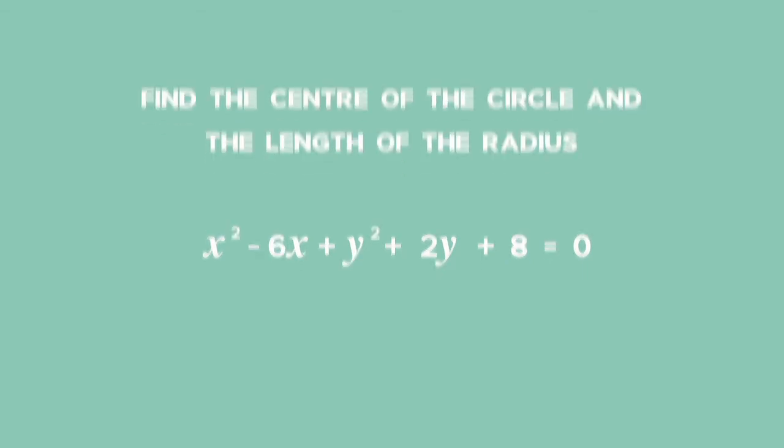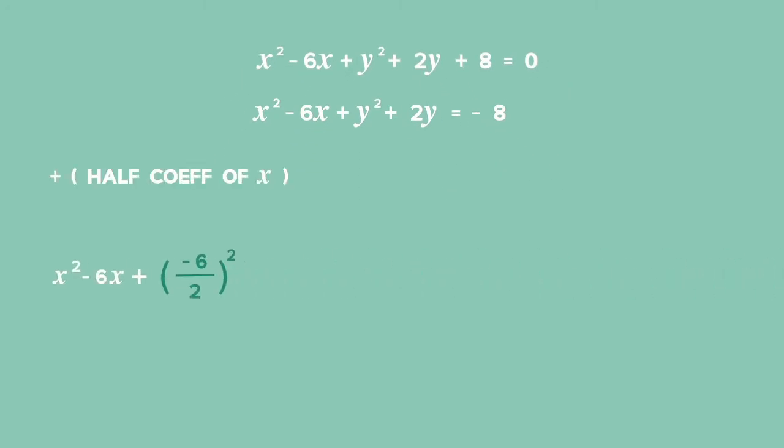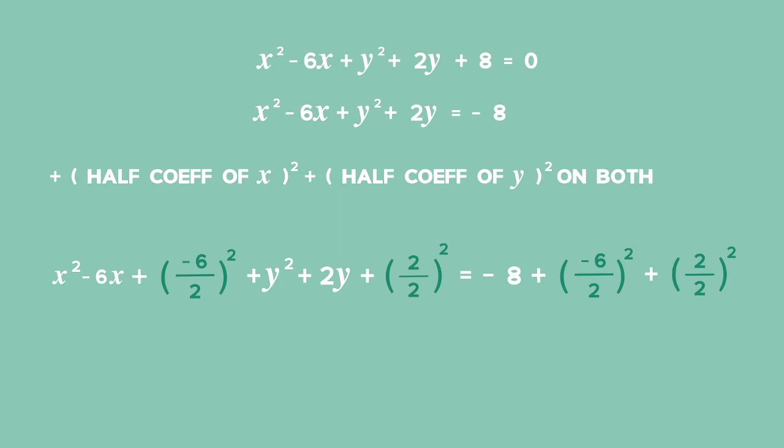Complete the square on the equation. The x's and y's are already together and we just need to subtract 8 from both sides. Add half of the coefficient of the x value and square it. We also add half of the coefficient of the y value and square it, but we must add these values to the other side of the equation as well.